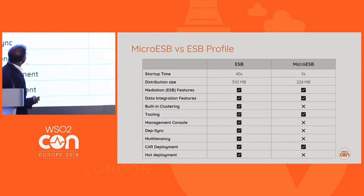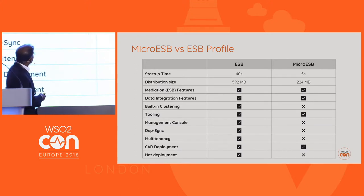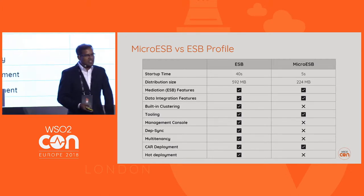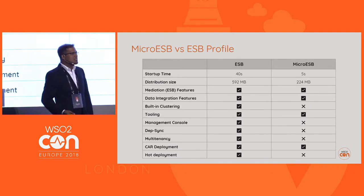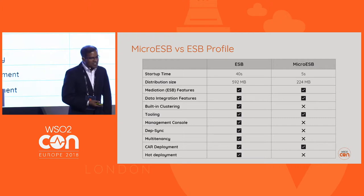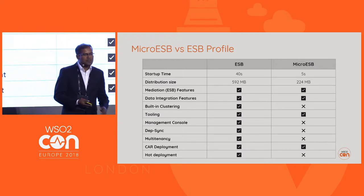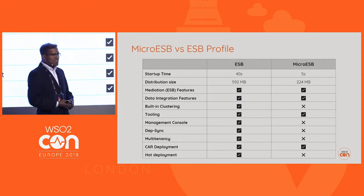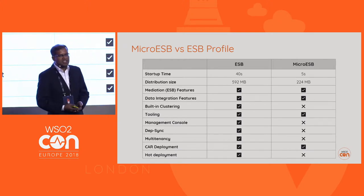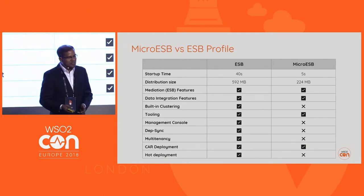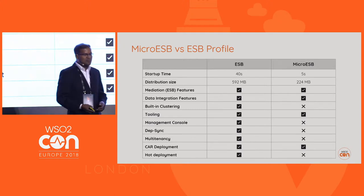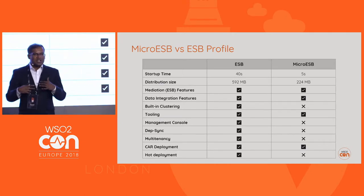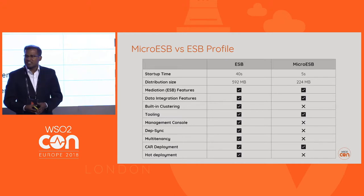The service mediation capabilities, data integration features, tooling, and the CAR-based deployment model are all still available in the micro-ESB runtime. If you have developed integrations using the existing ESB or the EI runtime, you can still deploy those applications in the micro-ESB runtime as well. We have removed some non-essential functionality like the management console, deployment synchronization, multi-tenancy, etc., because in an immutable container deployment, these functionalities are not essential.